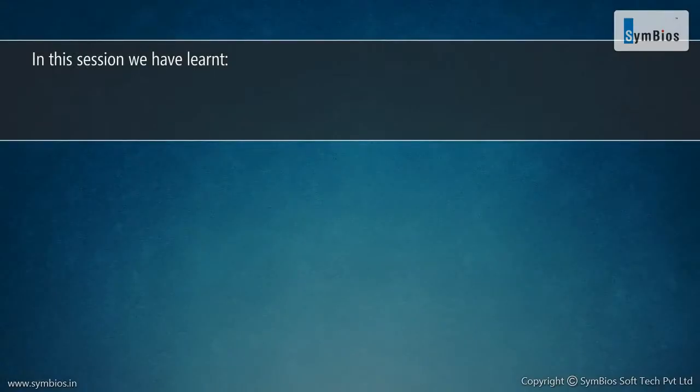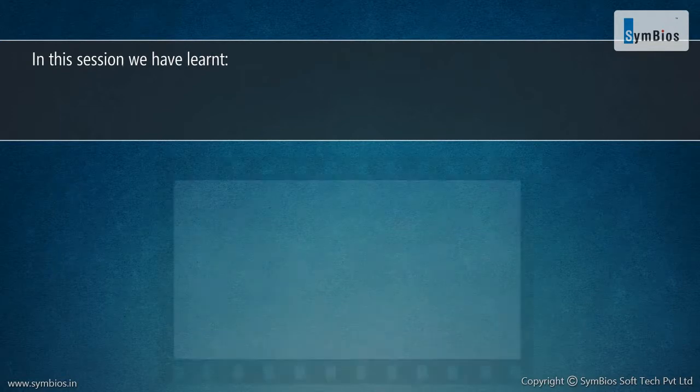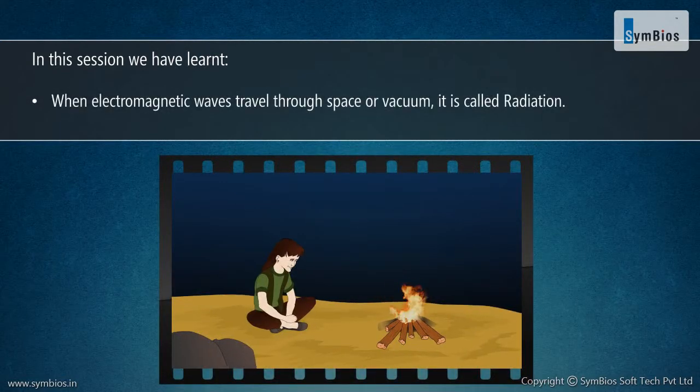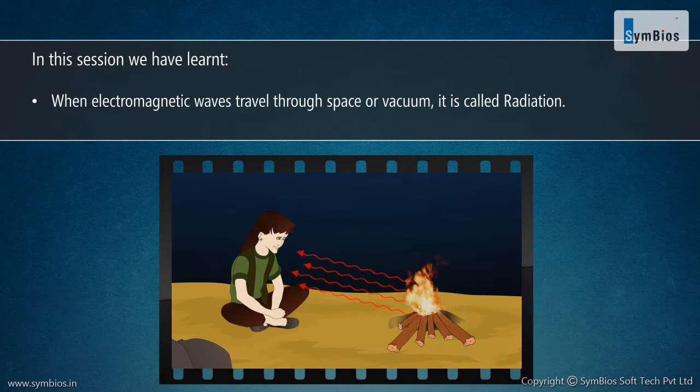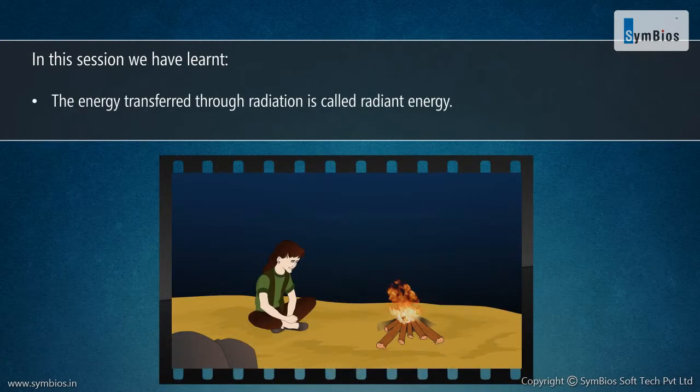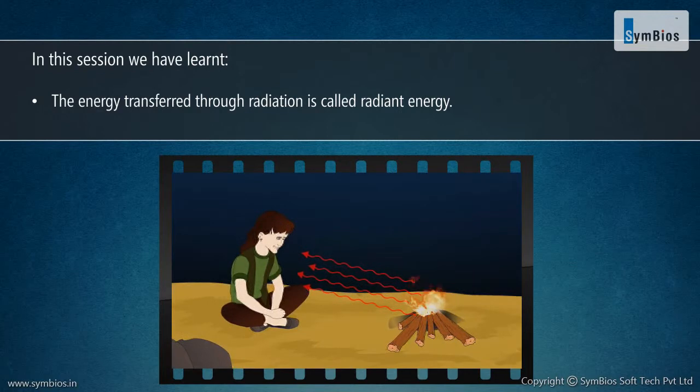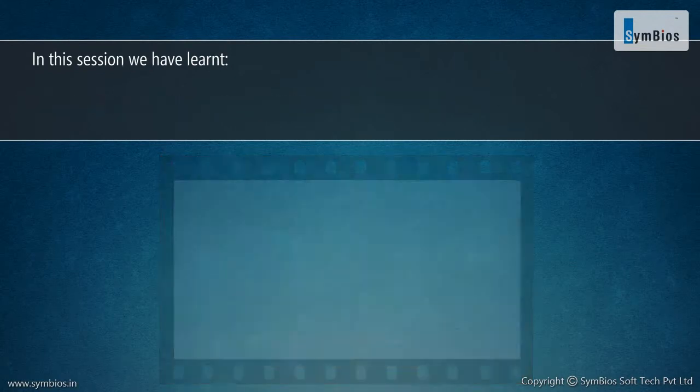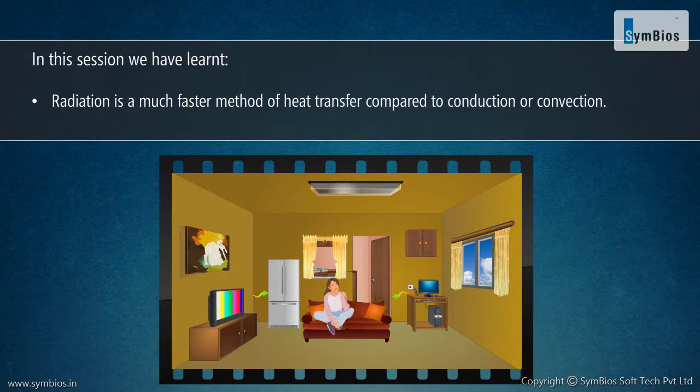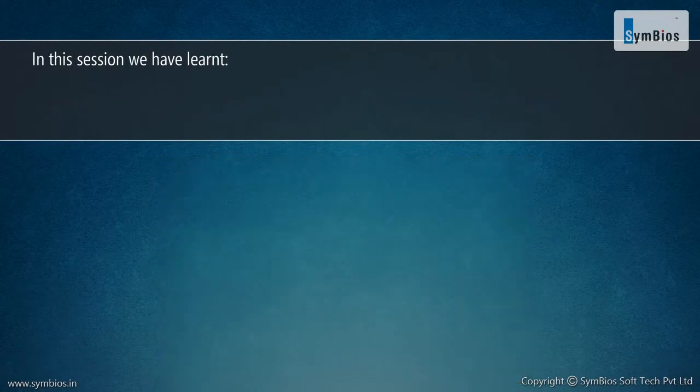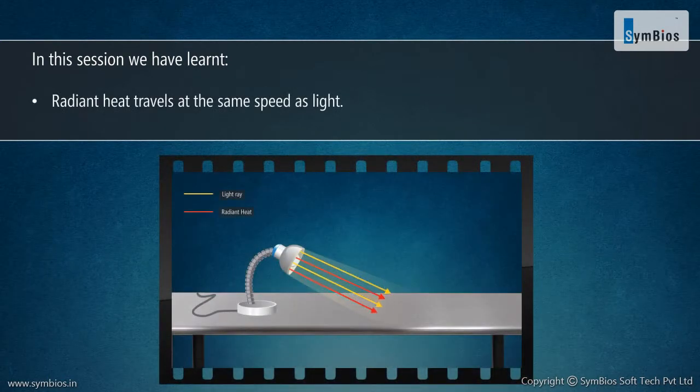In this session we have learned: when electromagnetic waves travel through space or vacuum, it is called radiation. Radiation is a much faster method of heat transfer compared to conduction or convection. Radiant heat travels at the same speed as light.